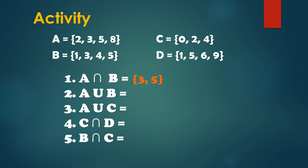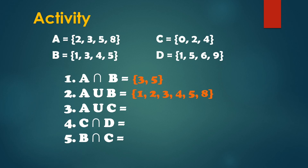Next, A union B. So kapag union, combining the elements of the given sets. So yung elements ni set A at set B pagsasama-samahin natin — 1, 2, 3, 4, 5, 8. Again, since may common elements tayo, susulat lang natin sila as one. So A union B is equal to {1, 2, 3, 4, 5, 8}.